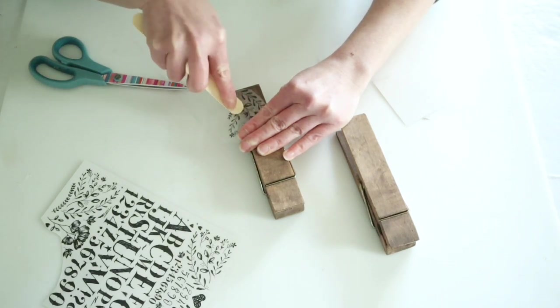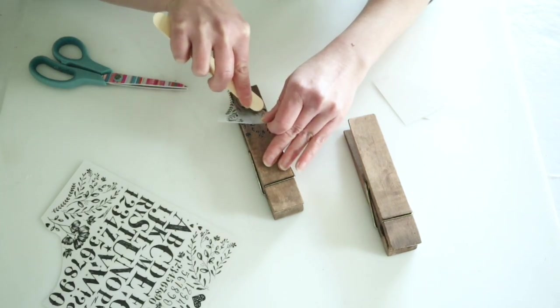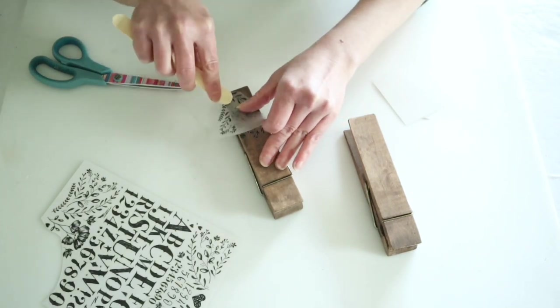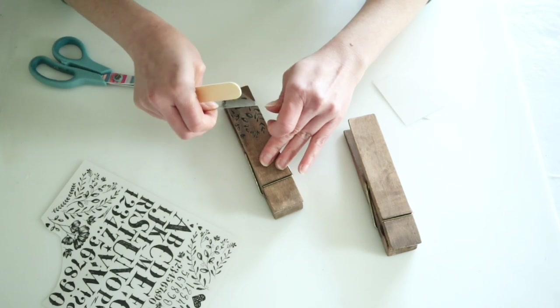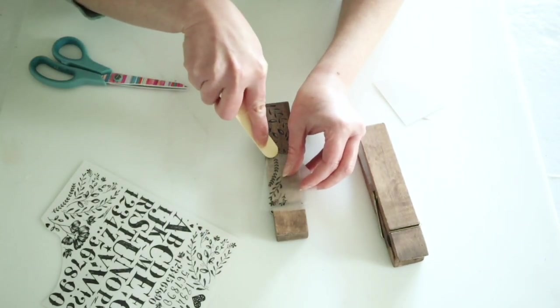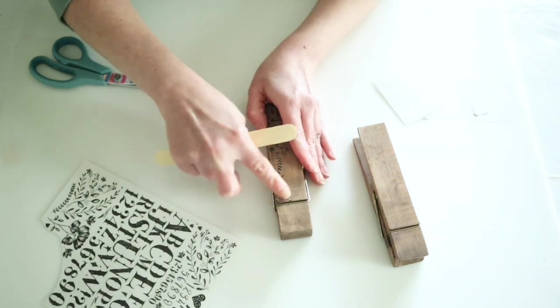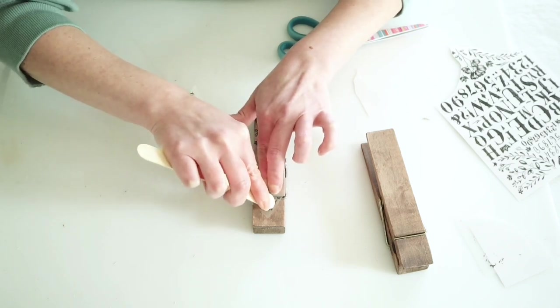I'm using some of these rub-on transfers that I got from Dollar Tree. I'm cutting bigger pieces off instead of doing them individually—I just did a cluster of them on this first clothespin, and then filled in any little spaces. I did the exact same thing to the other one.